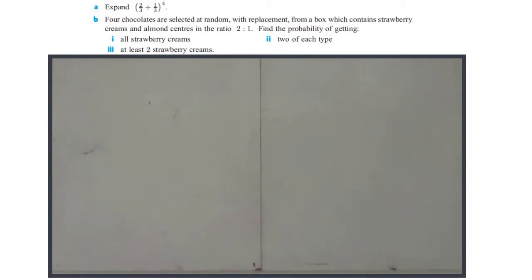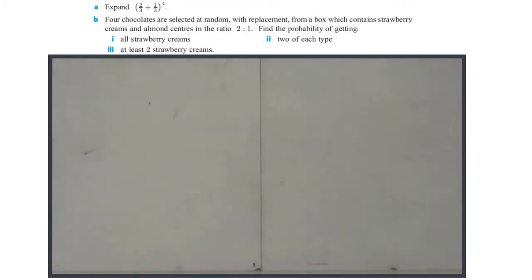Four chocolates are selected at random with replacement from a box which contains strawberry creams and almond centers in the ratio of two to one. Find the probability of getting: one, all strawberry creams; two, two of each type; and three, at least two strawberry creams.